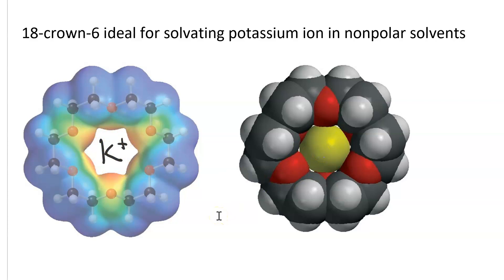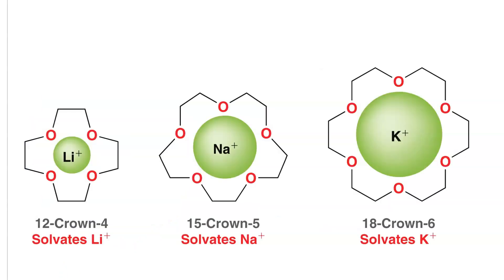Now, 18-crown-6 is perfect for potassium. 15-crown-5 would be better for a smaller metal like sodium, and 12-crown-4 is perfect for lithium.